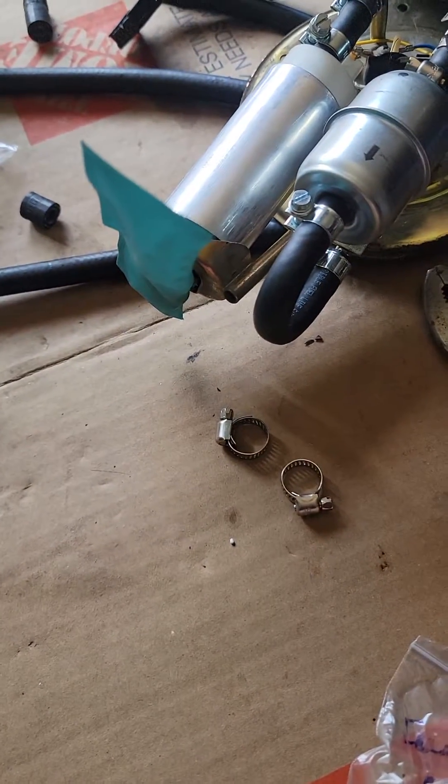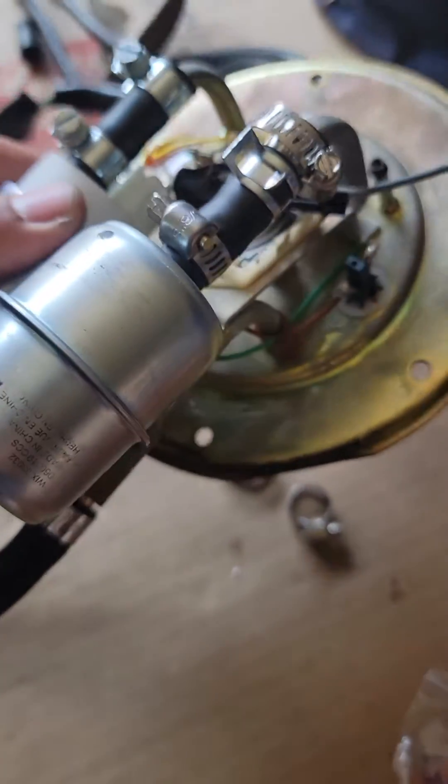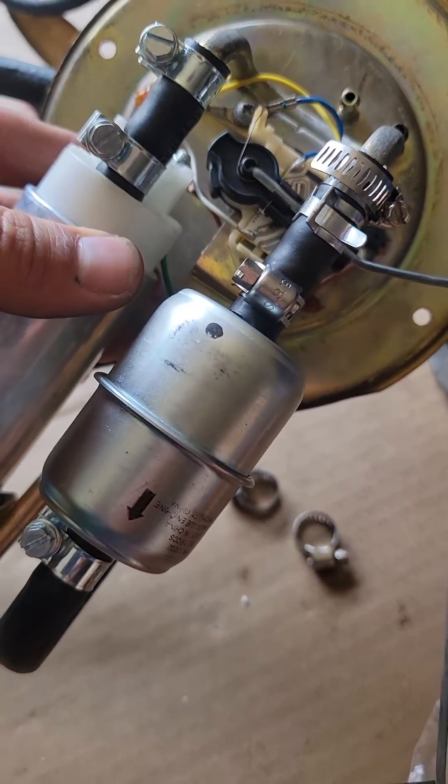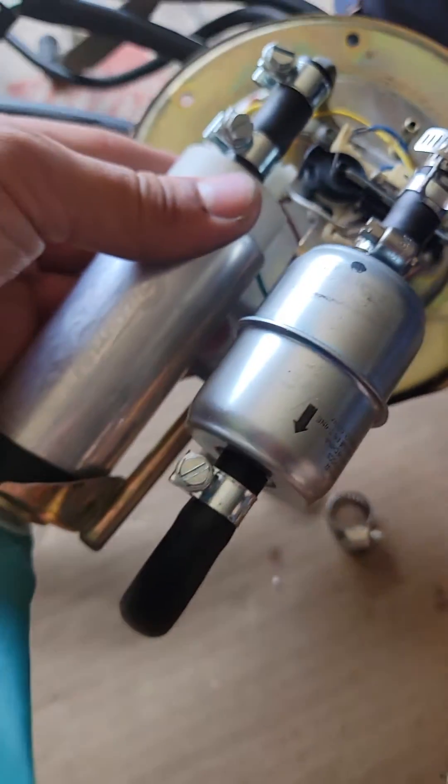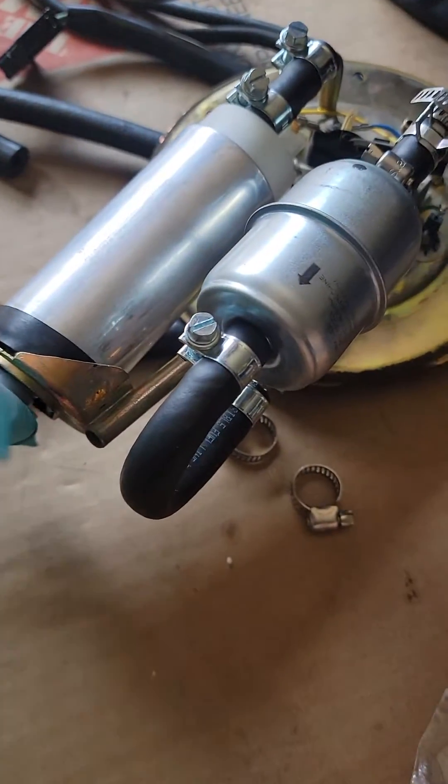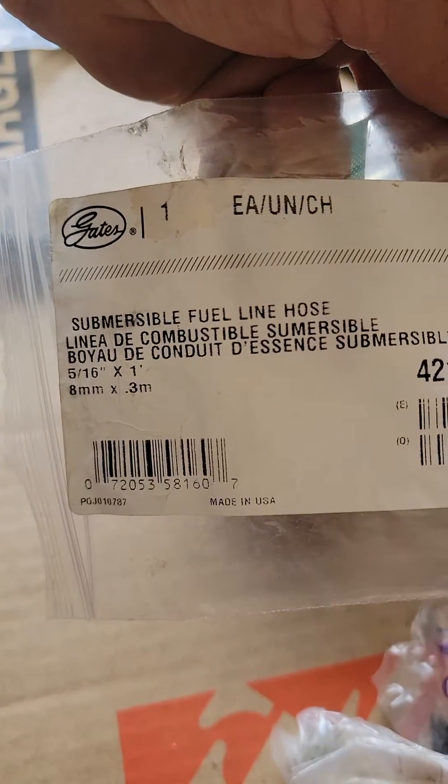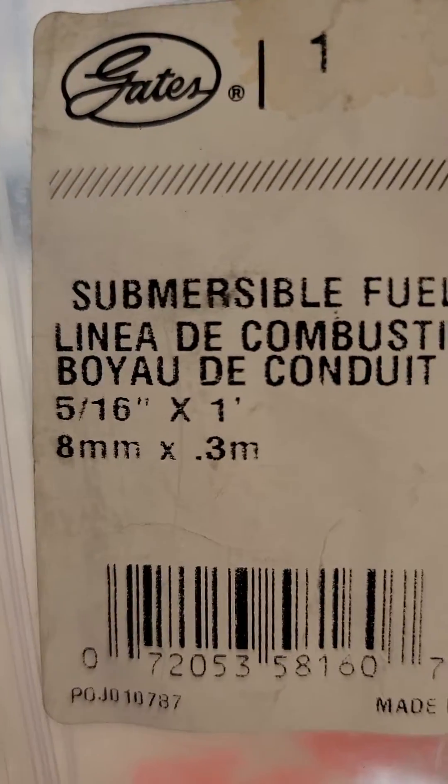Anyone doing the fuel pump and fuel filter for the R1100 RS RT, make sure you use this one. This is the part number, R10 27093. It goes for about $40 a foot.